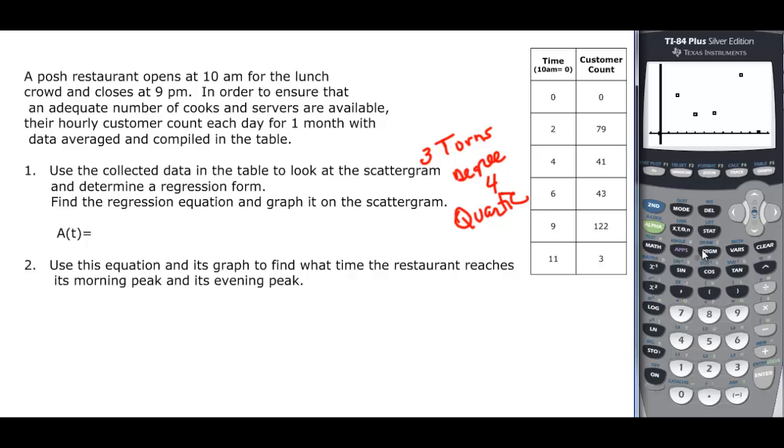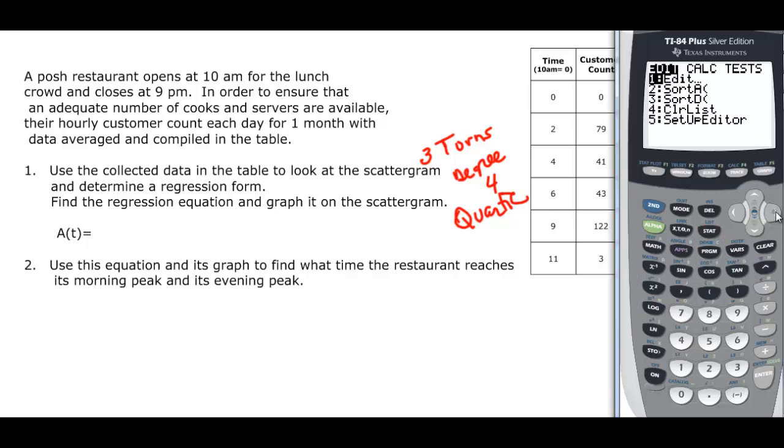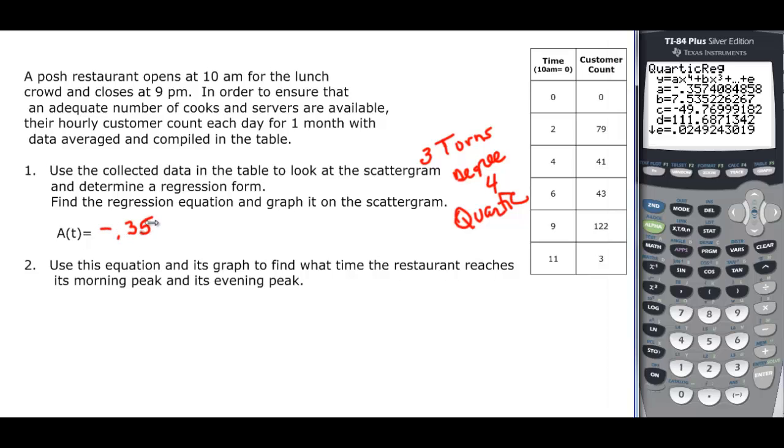So go back over to stat and calculate, and then quart reg down here is 7, and you find out you get this wonderful equation that I have plugged in. I'll write it for you here. It's negative 0.357t to the 4th plus 7.535t cubed minus 49.77, actually 49.699t squared plus 111.687, and that's t, and then plus 0.025 when we round. So we found a quartic.